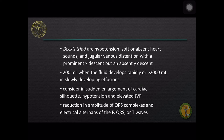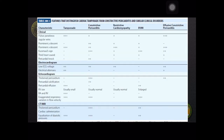Cardiac tamponade should be considered in sudden enlargement of cardiac silhouette, hypotension, and elevated jugular venous pressure. The ECG usually reveals reduction in amplitude of QRS complexes and electrical alternans of the P, QRS, or T waves. This table lists the features that distinguish acute cardiac tamponade from constrictive pericarditis, restrictive cardiomyopathy, right ventricular myocardial infarction, and effusive constrictive pericarditis.